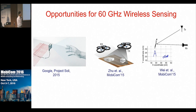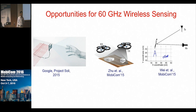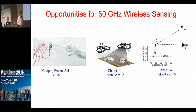On the other hand, such sensitivity to human activities also creates new opportunities for human activity sensing. For example, recent work has shown the feasibility of tracking finger gestures, recognizing objects, as well as tracking objects with millimeter-level precision.